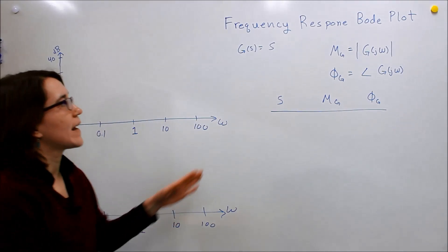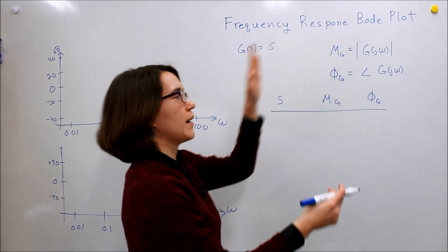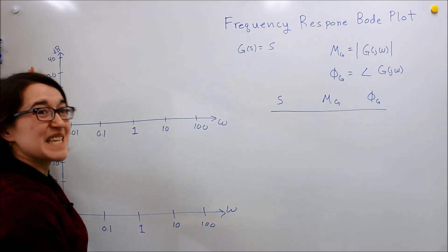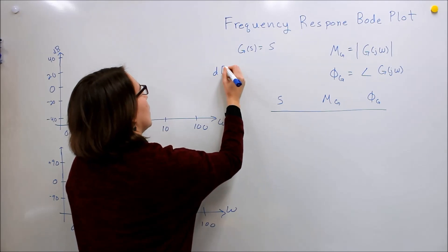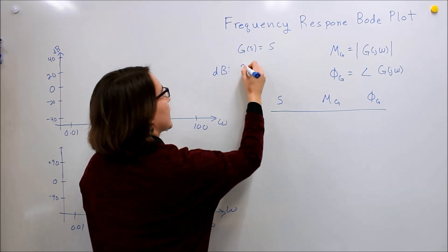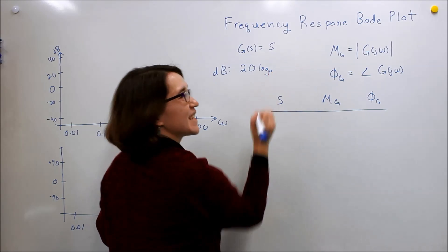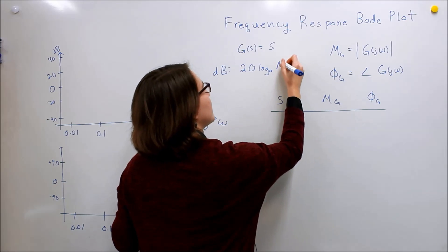One thing I want to point out is that when we plot the magnitude on a standard Bode plot, you're going to plot the magnitude in dB, which means you take 20 times the log base 10 times the magnitude value.